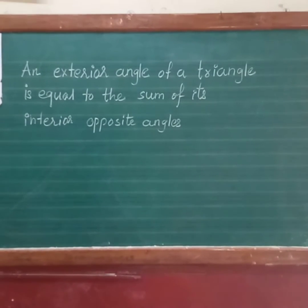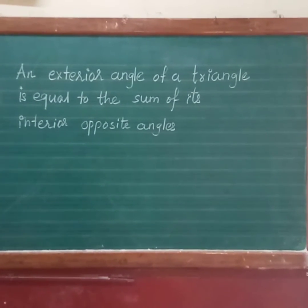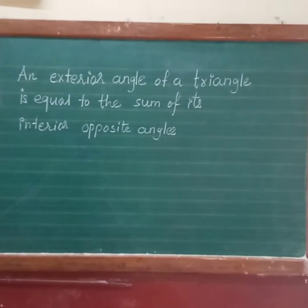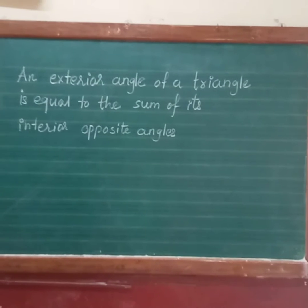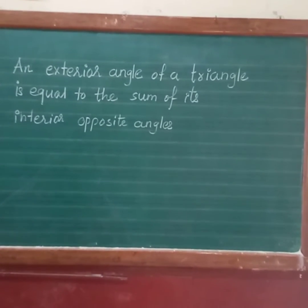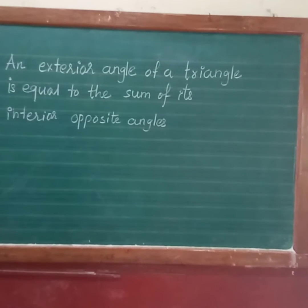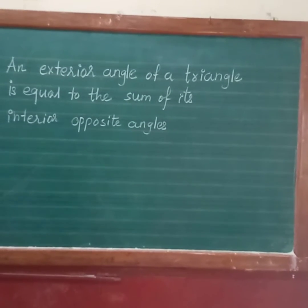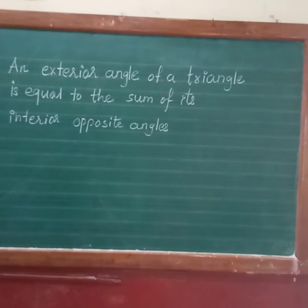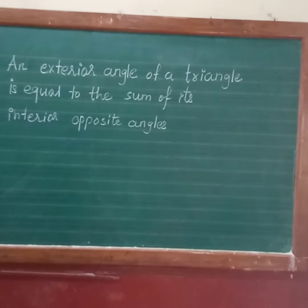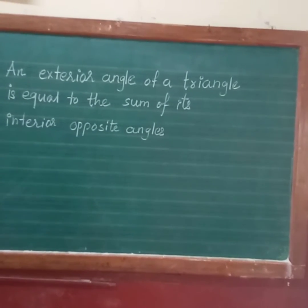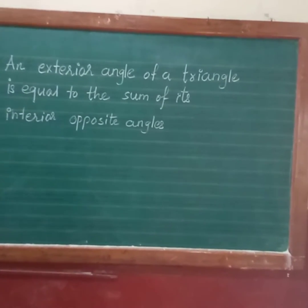Welcome back students. Our next topic is: an exterior angle of a triangle is equal to the sum of its interior opposite angles. To explore this, we will do one activity on the basis of which we will discuss this property of a triangle. Let's see the activity.